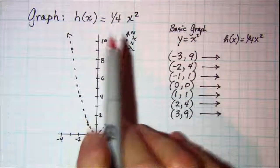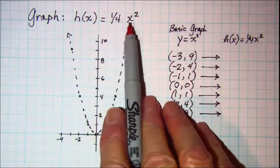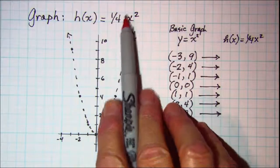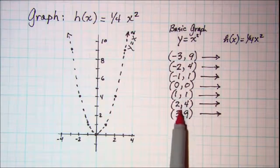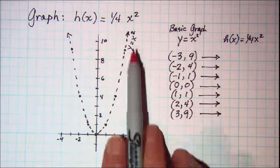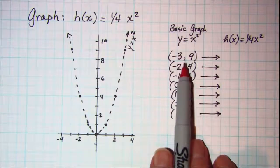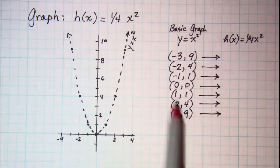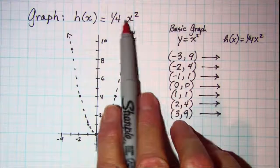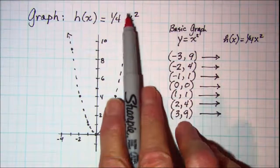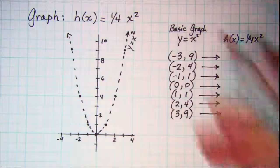On this one, we're asked to graph h of x equal 1 fourth x squared. Again, our basic graph is y equals x squared. I've shown the graph with the dotted line and some of the points on that graph are shown here. Now we'll be multiplying y — remember f of x is the same as y — so we'll be multiplying y by 1 fourth.